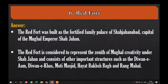Red Fort. Red Fort was built as a royal family palace of Mughal Emperor Shah Jahan, as the capital of the Mughal Empire. The Red Fort is considered to represent the zenith of Mughal creativity under Shah Jahan and consists of other important structures such as Diwan-e-Aam, Diwan-e-Khas, Moti Masjid, Hayat Baksh Bagh, and Rang Mahal.